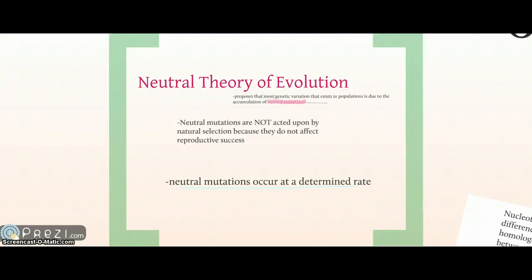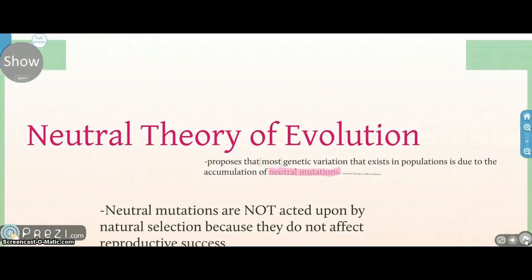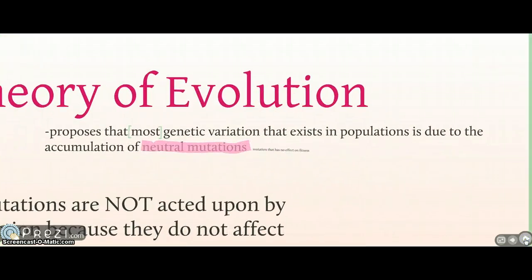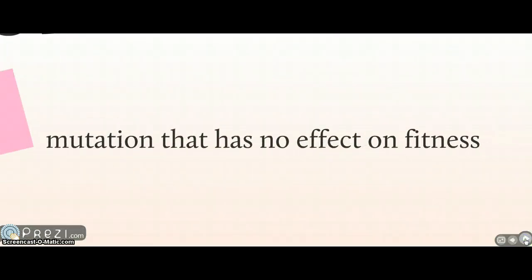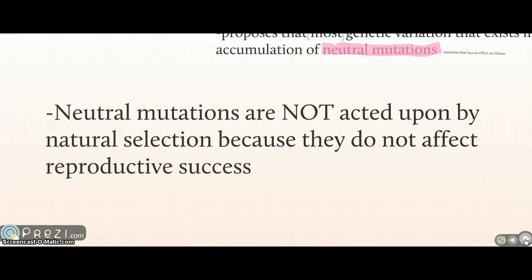The neutral theory of evolution is a review, but it was mentioned in this section because it helps understand where the scientists Zuckerkandl and Pauling, who originated the idea, were coming from. It proposes that most genetic variation existing in populations is due to the accumulation of neutral mutations. A neutral mutation is a mutation that has no effect on fitness. These kinds of mutations are not acted upon by natural selection because they do not affect reproductive success.